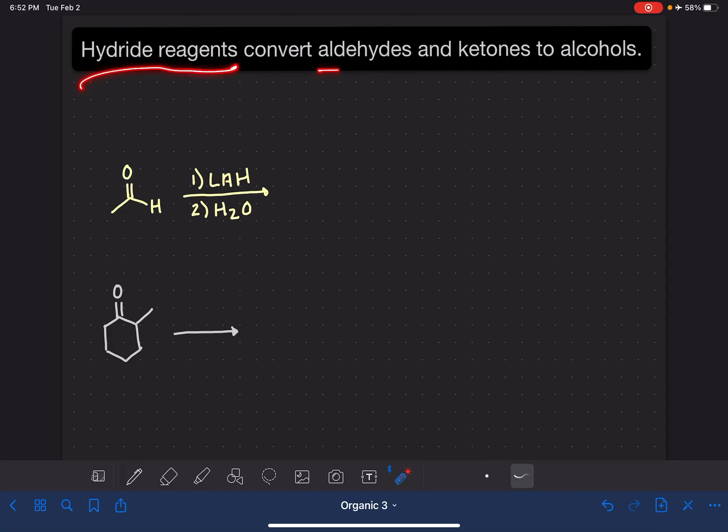Hydride reagents can be used to convert either aldehydes or ketones to alcohols. A hydride reagent is a molecule that is the source of the hydride ion, H-. The two most common hydride reagents are lithium aluminum hydride, abbreviated LAH, and sodium borohydride, NaBH4.